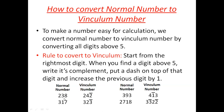Let's learn this with an example. Convert 238 to Vinculum. Start from the rightmost digit, which is 8. Since 8 is above 5, take its complement. Complement of 8 is 2. Put a bar on top of 2 and add 1 to the previous digit: 3 + 1 = 4. Since 4 is less than 5, it remains as it is. So 238 becomes 24̄2.